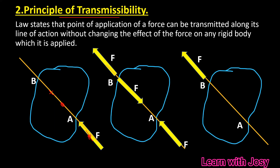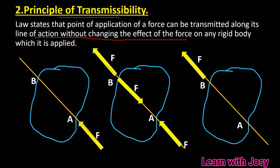The transfer to the point of application — a force can be transmitted along its line of action without changing the effect of the force on the rigid body to which it is applied. If a force can be transmitted along the line of action, it will be transmitted along the line of action with the same force.